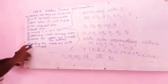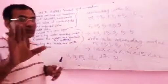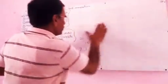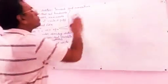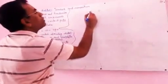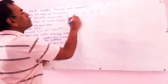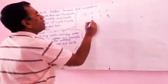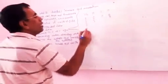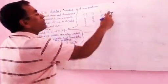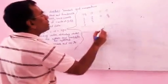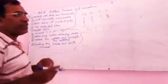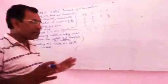Now I am describing: count the objects and write the numbers. You are given many objects to count and write the number. For example, columns are given for 1's, 10's, 100's, and 1000's. The count is: 3 in 1's, 1 in 10's, 4 in 100's, 5 in 1000's. So the number is 5,413.